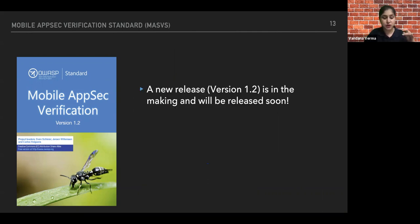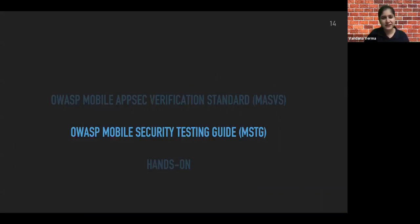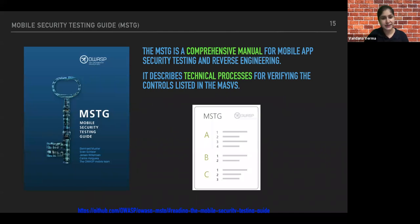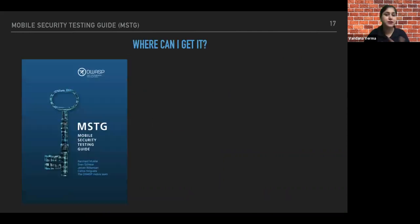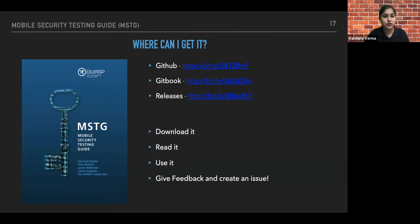When we talk about MSTG, the Mobile Security Testing Guide, it is a complete manual. It's like the Web Security Testing Guide — a manual that helps you grow in the web app security space. This is another equally important guide. It provides an overview around code, around dynamic analysis, and where exactly you can pick up. You can find it on GitHub and Gitbook, and there are releases available you can go ahead and use.